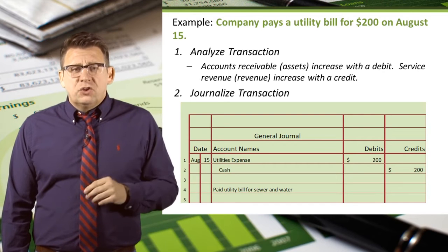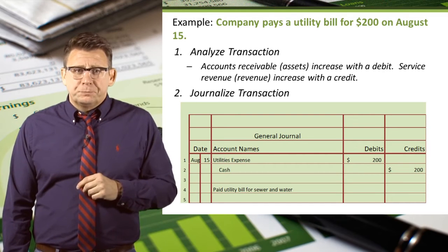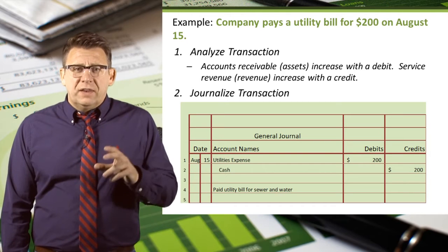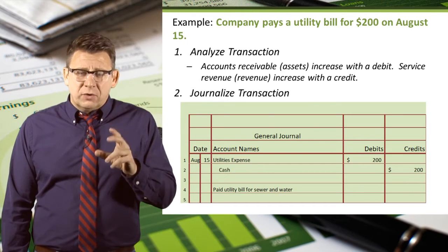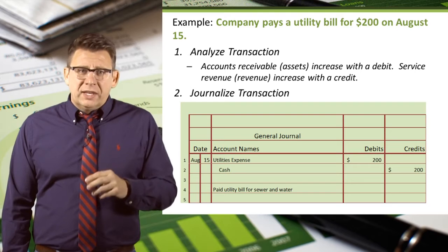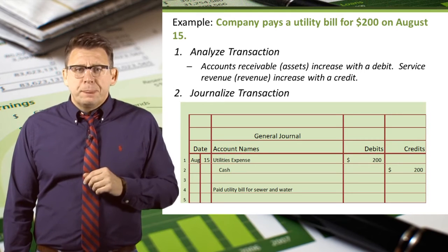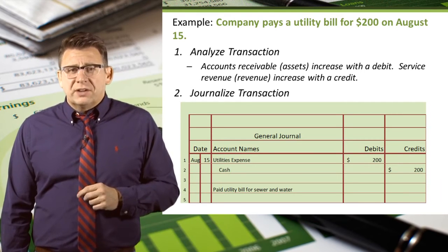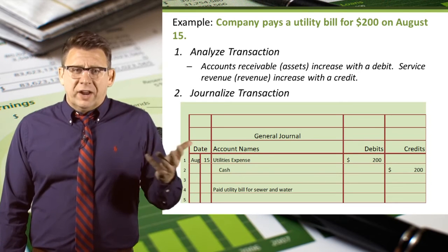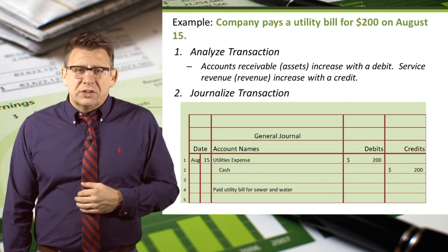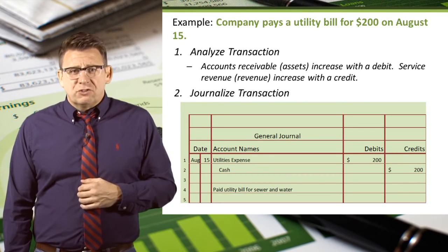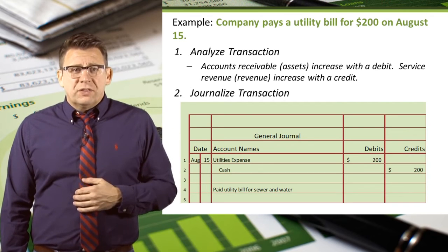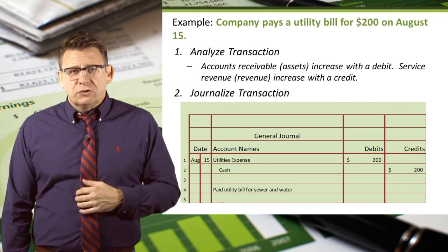Then $200 in the debit column. Next we enter cash as the credit account. We'll want to indent cash, as you can see here, and then $200 in the credit column. Finally we would enter a description for this transaction, and we've now entered this transaction into the general journal.